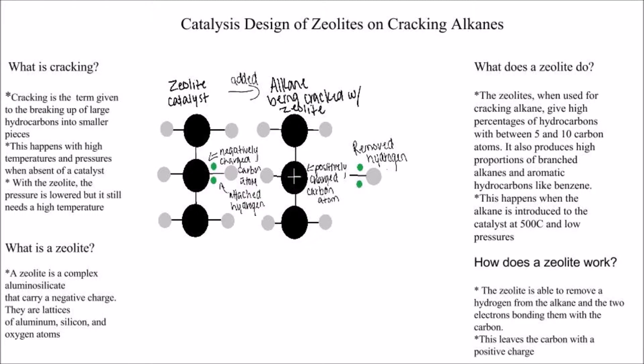Catalyst design of zeolites on cracking alkanes. Cracking is the term given to the breaking up of large hydrocarbons into smaller pieces. This happens with high temperatures and pressures when absent of the catalyst. With the zeolite, the pressure is lowered but it still needs a high temperature.